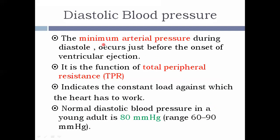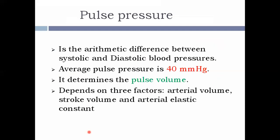Diastolic blood pressure is the minimum arterial pressure recorded during diastole. This occurs just before the onset of ventricular ejection. It is a function of the total peripheral resistance, and the normal range is around 60 to 90 mmHg in a young adult.